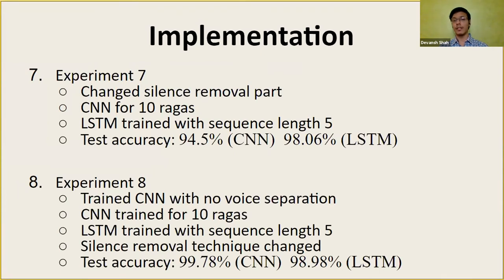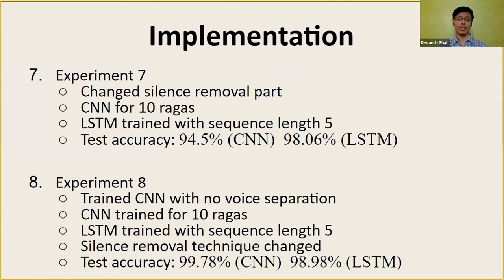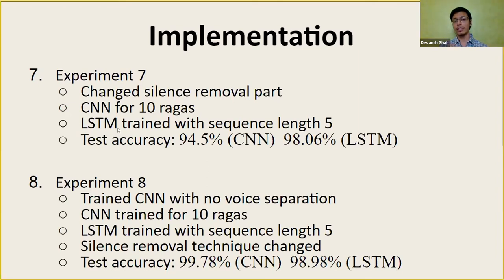In experiment seven, we realized that the InaSpeech Segmenter silence removal model was classifying a lot of useful data as being silent, so we changed to a simple threshold-based technique — any part of the audio where the intensity is less than 60 dB is considered silent. Because we now had more data, we also trained an LSTM for the first time with sequence length five: we trained the CNN, then using the feature vectors from the CNN, we trained the LSTM.